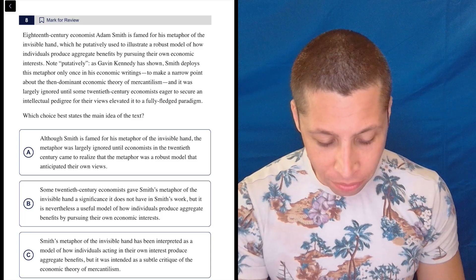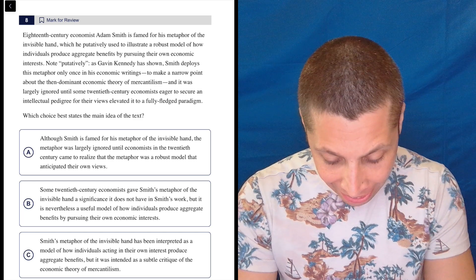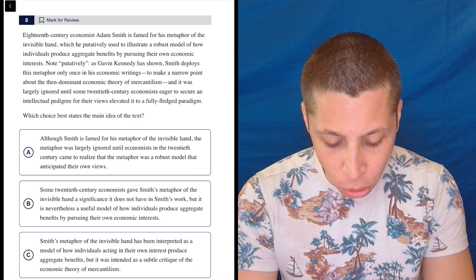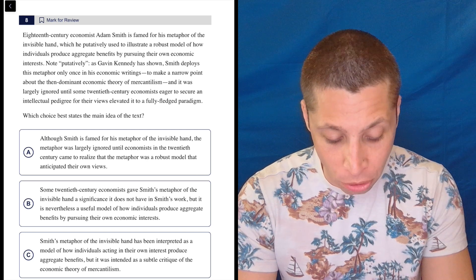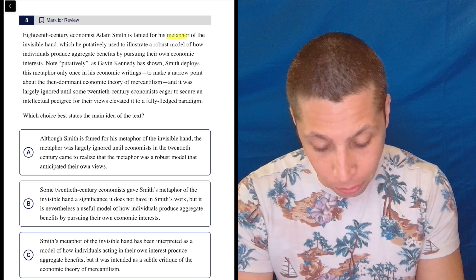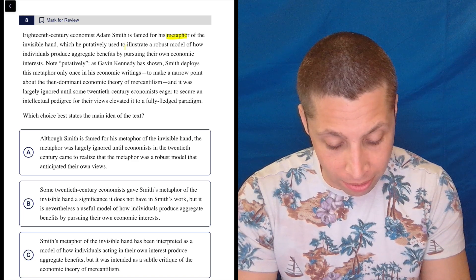18th century economist Adam Smith is famed for his metaphor of the invisible hand, which he putatively used to illustrate a robust model of how individuals produce aggregate benefits by pursuing their own economic interests. So it's a metaphor, and it illustrates something.